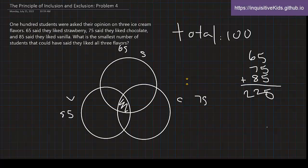So 225 is greater than a total of 100, and you can't have 225 separate students because there are only 100 students, meaning that there are some overlaps. So let's first subtract 100 from 225.